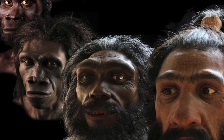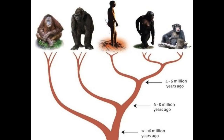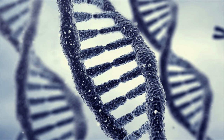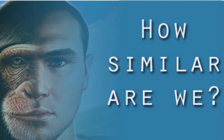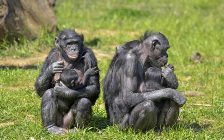How can we be so similar and yet so different? Human and chimp DNA is so similar because the two species are so closely related. Humans, chimps, and bonobos descended from a single ancestor species that lived six or seven million years ago. As humans and chimps gradually evolved from a common ancestor, their DNA passed from generation to generation changed too. Many of these DNA changes led to differences between human and chimp appearance and behavior.